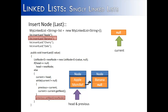We say previous.setNext equals new node. The previous was the head node, so we set its next — which was null — to the new node. Banana is now inserted at the end of the list, and its next value is null, so we know it is the last value in the list.